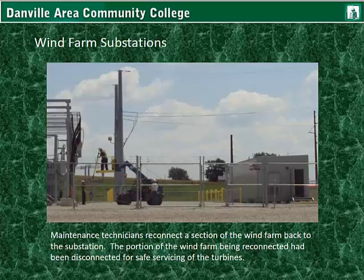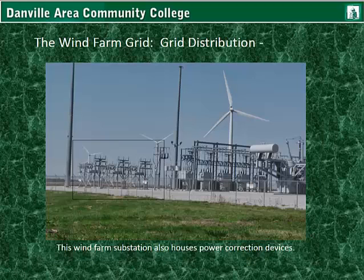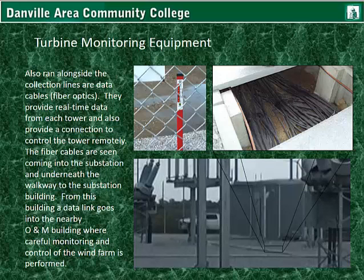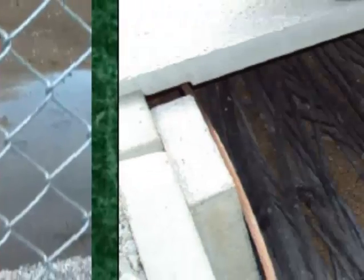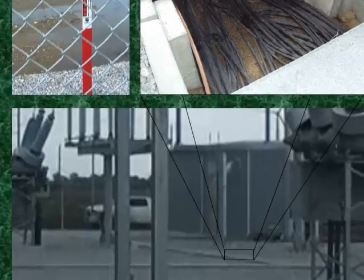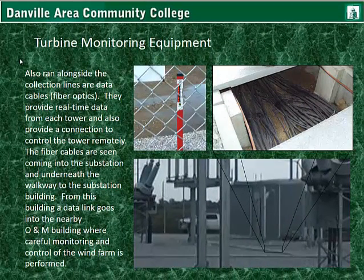Maintenance technicians reconnect a section of the wind farm back to the substation — the portion had been disconnected for safe servicing of the turbines. This wind farm substation also houses power correction devices. Also run alongside the collection lines are fiber optic data cables. They provide real-time data from each tower and also provide a connection to control the tower remotely. The fiber cables come into the substation and underneath the walkway to the substation building, where a data link goes into the nearby operations and maintenance building for careful monitoring and control of the wind farm.